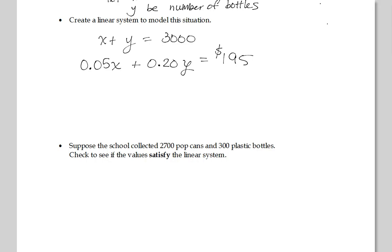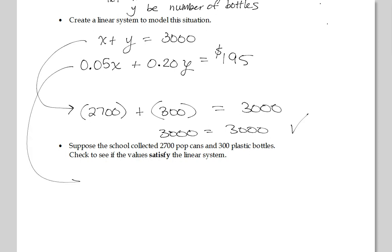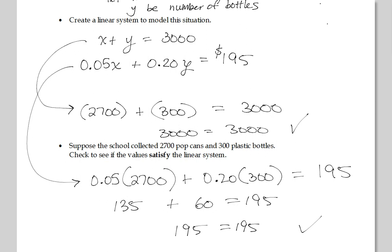So here's the answer. So 2,700 cans. Let's plug it into the first one. 2,700 cans plus 300 bottles. Does that satisfy 3,000? Yeah, so that one's okay. Check. Now let's satisfy the second one. Five cents for 2,700 cans and 20 cents for 300 bottles. Hopefully that equals 195. So times and add separately. This is 135, 0.2 times 300. This is 60, and it works. Check. We're just satisfying. That's all we're doing. Verify, check. We're only just checking.